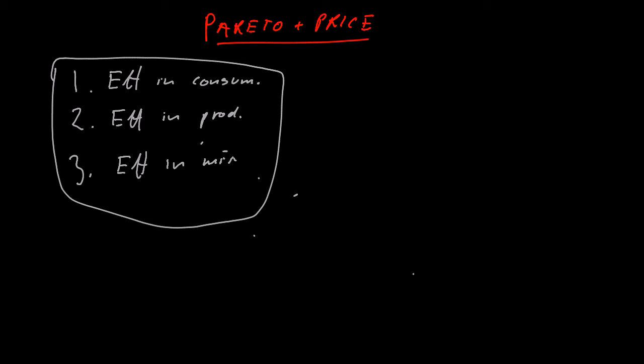These three things may sound abstract, but they have certain implications for prices. We can look at prices and see whether you actually have efficiency in consumption, efficiency in production, or efficiency in the mix. To show that, we need to be a little more formal. Let's take efficiency in consumption: the consumer tries to maximize utility over two goods, X and Y, subject to a budget constraint — the price of X times the quantity of X, plus the price of Y times the quantity of Y, must equal income.